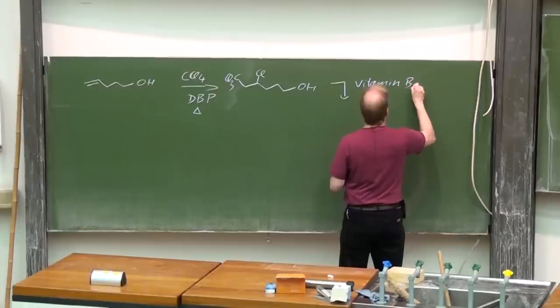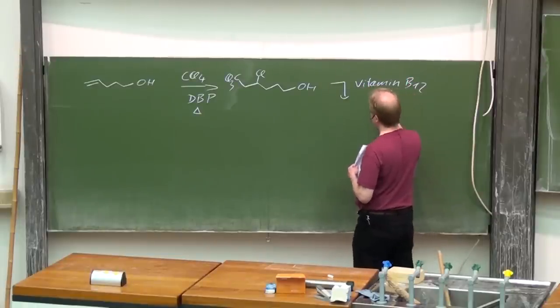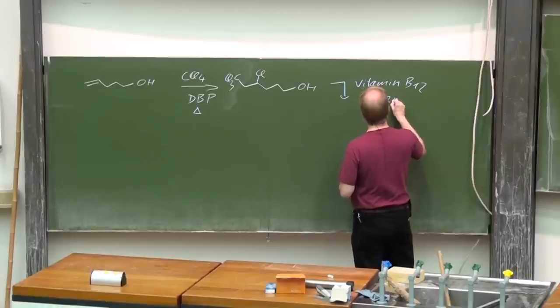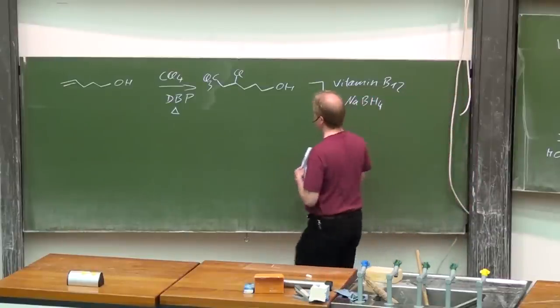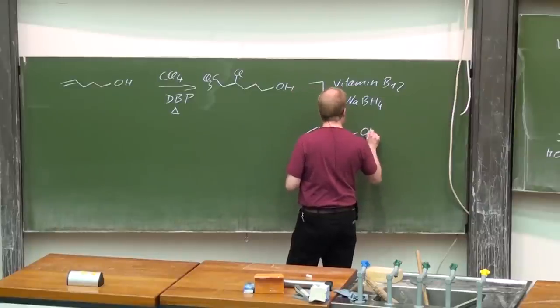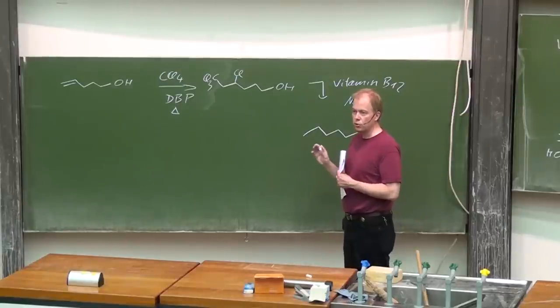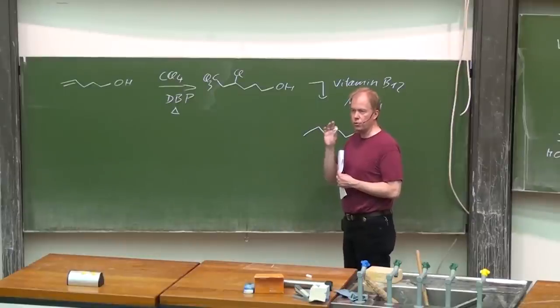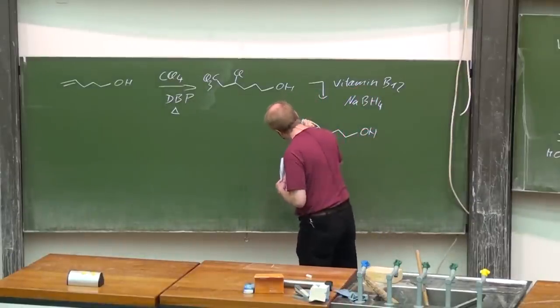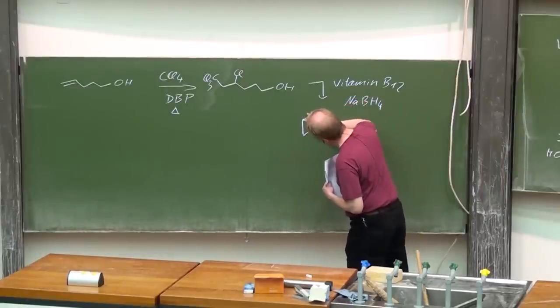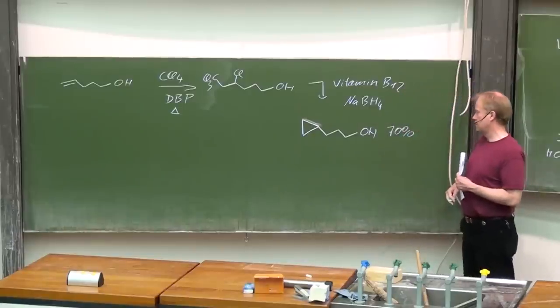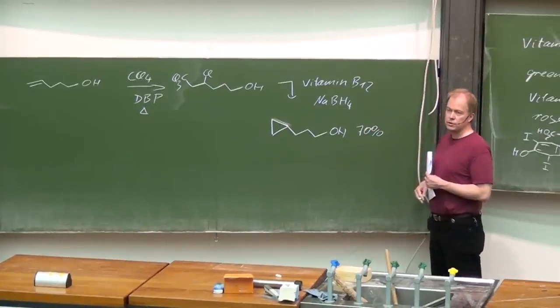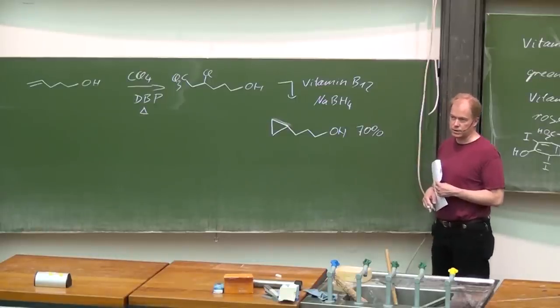Vitamin B12 as catalyst and sodium borohydride as reducing agent then results in a complete dechlorination with the formation of one C-C bond, giving a cyclopropane moiety, and this is achieved in about 70% yield. So enough for today, thank you for listening. Tomorrow we will discuss nickel chemistry, see you tomorrow.